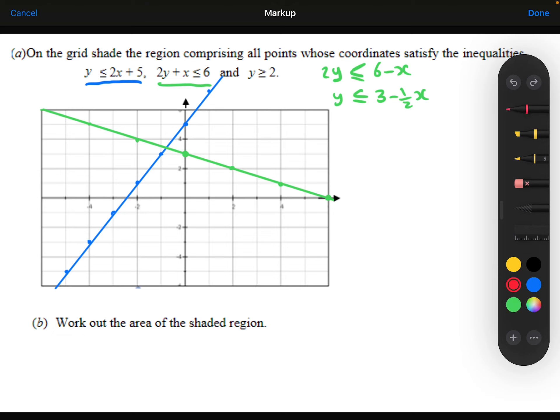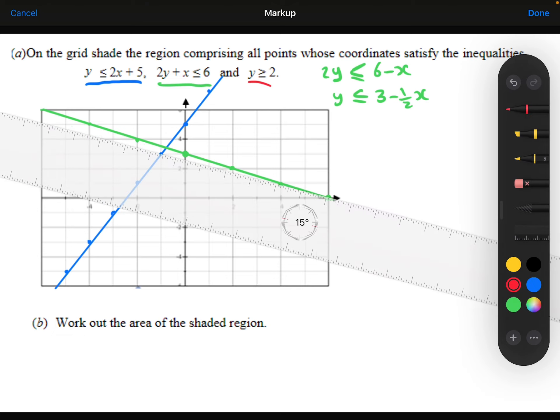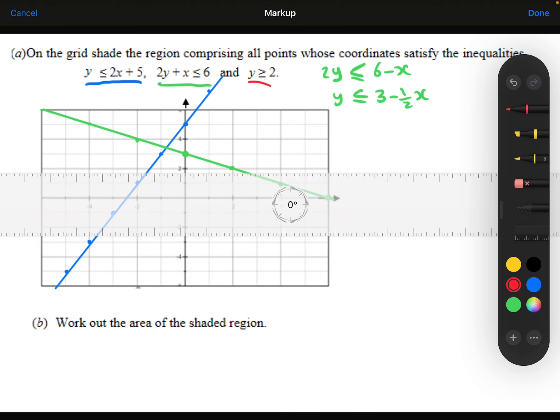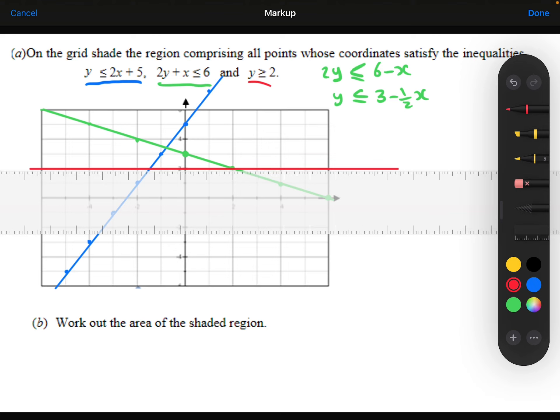And then finally, we've got y has got to be greater than or equal to 2. So that is this line here. That's where y equals 2.